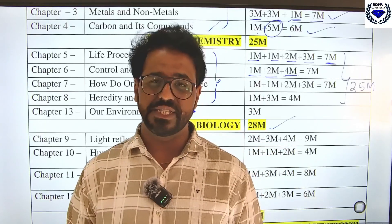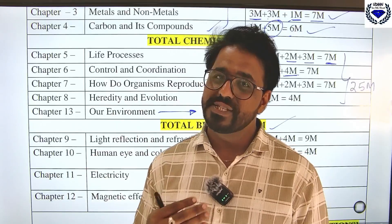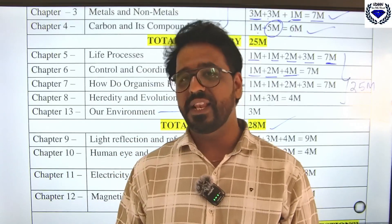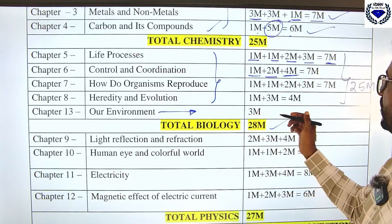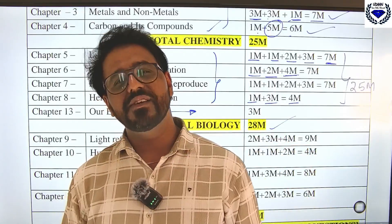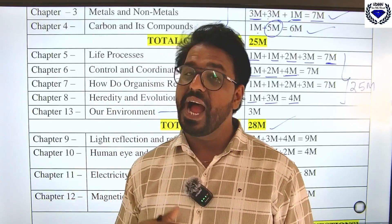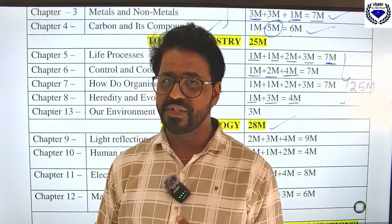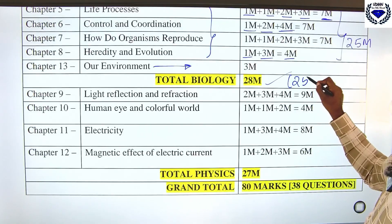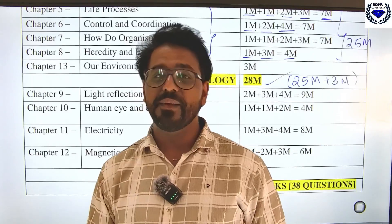Functions of each part of the brain — forebrain, midbrain, hindbrain — were asked last year, so be ready to answer diagram-related HOTS questions. From Heredity and Evolution: one three-mark and one one-mark question. For three marks, Mendel's monohybrid cross or dihybrid cross — draw the checkerboard (Punnett square) — one of them is a fixed question. Total biology is 28 marks: 25 from the four main biology chapters plus 3 marks from Our Environment.